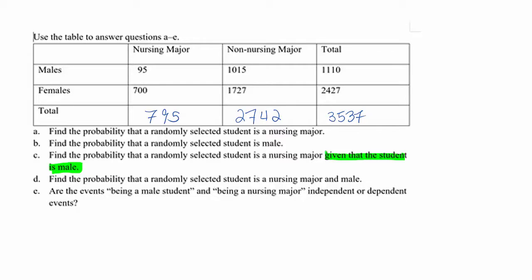Which means we don't care about female students in this case. We only care about male students, which means you only look at this row here. If the given condition is female, then you only look at the female row.